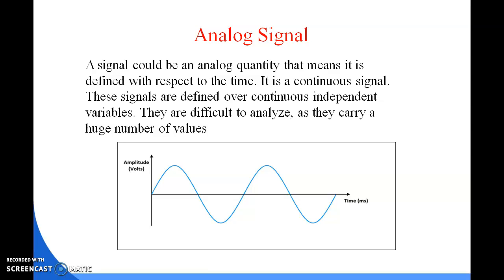Bandwidth is the range of frequencies that a medium can pass — it is called its bandwidth. It is a property of a medium, and it is the difference between the highest and the lowest frequency that a medium can satisfactorily pass.